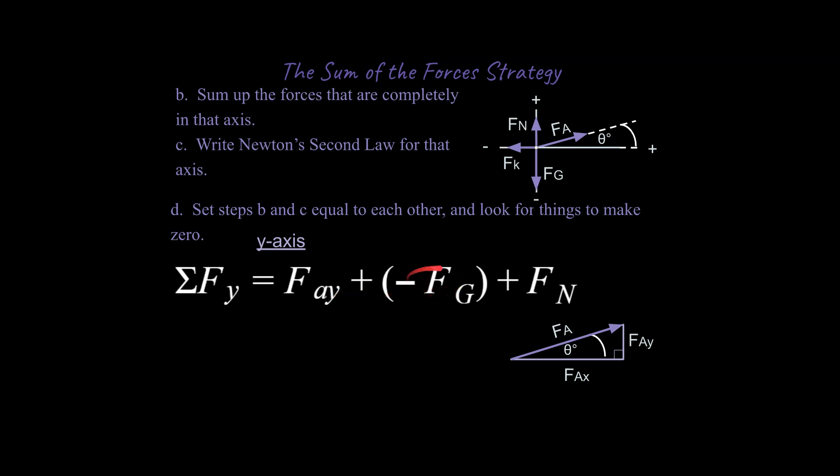Now this is the case where you would have to make this negative for instance because it's in the negative direction just like I made my fk negative before and then the next step is going to be to write out Newton's second law. The sum of the forces in the y is equal to mass times acceleration in the y and then we set them equal to each other and we see what pops out of this.